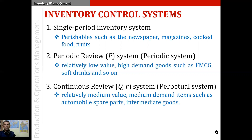Third, we have the continuous review system, the Q,R system, also known as the perpetual system. Relatively medium value, medium demand items, such as automobile spare parts, intermediate goods, and so on are managed with this system.